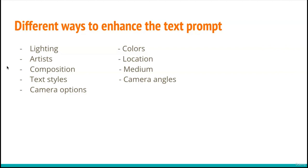In the upcoming modules, we're going to do a module on each one of these sections and understand how lighting, colors, using different artists, describing a location, changing the composition, assigning a different medium, using different styles by improvising on different text variations, and lastly cover how to influence the image by assigning a camera or a camera angle to it.